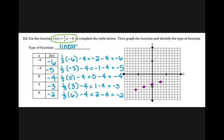Six, negative two. You can see that these five dots form a nice straight line on the graph, making it a linear function.